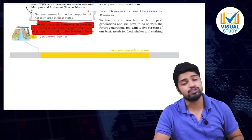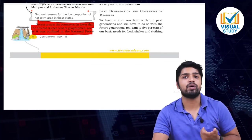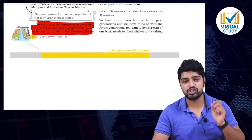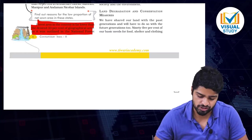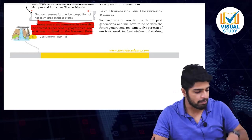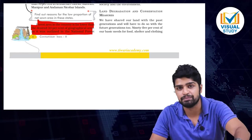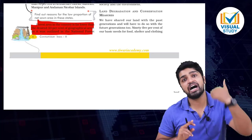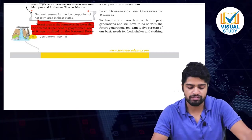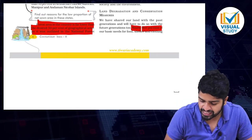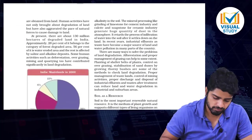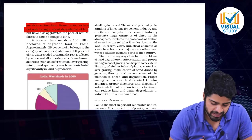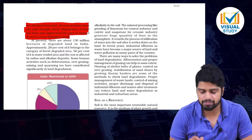Land degradation and conservation measures: as a part of our 'Save Earth Project,' we should ensure that land does not degrade in quality. Degradation means reduction in quality — land size does not decrease. We have shared our land with past generations and must do so with future generations as well. Ninety-five percent of our basic needs for food, clothing and shelter are obtained from land. Human activities have not only brought about degradation of land but have also aggravated the pace of natural forces causing damage.